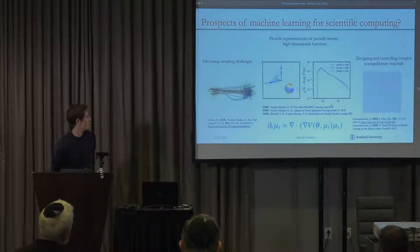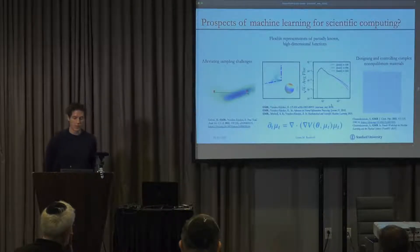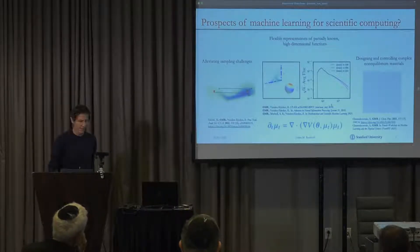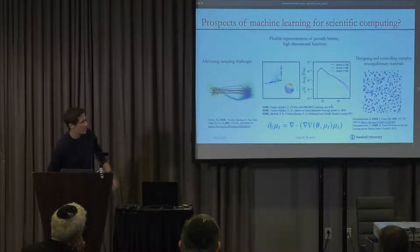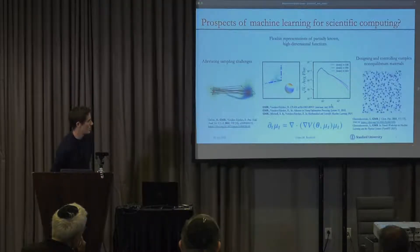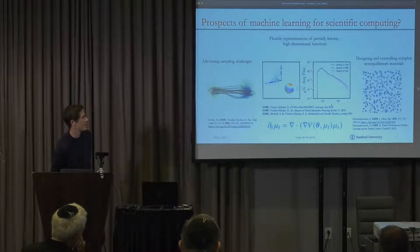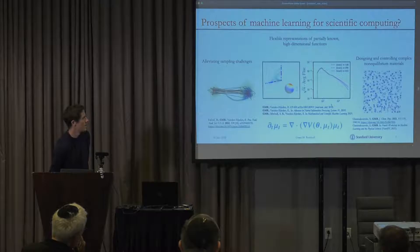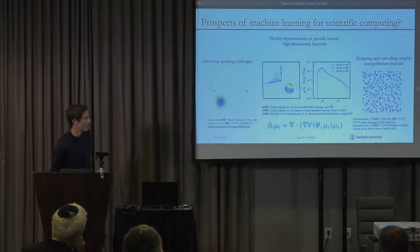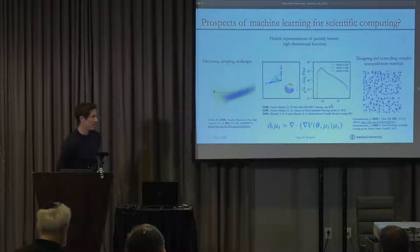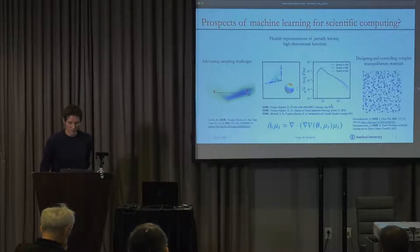Another context where we've explored this a lot is in high dimensional control problems. This is just showing a non-equilibrium control problem where we're controlling the clustering of active Brownian particles through a sort of dynamically learned external protocol. That's something that we're pursuing a lot in the context of biological self-assembly.